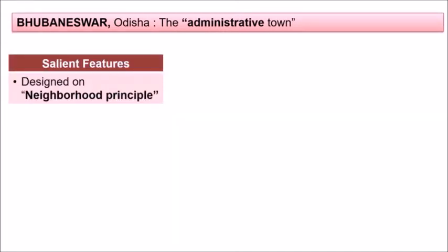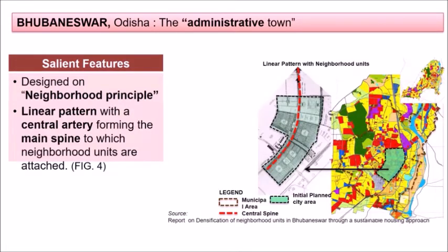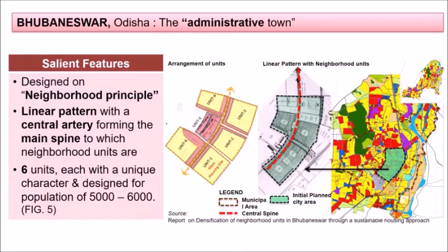The planning concept used for Bhubaneswar was the neighborhood principle. The city was planned in a linear fashion with a central artery forming the main spine, and all neighborhood units were attached to it. There were six units, each with a unique character and designed for a population of five thousand to six thousand.